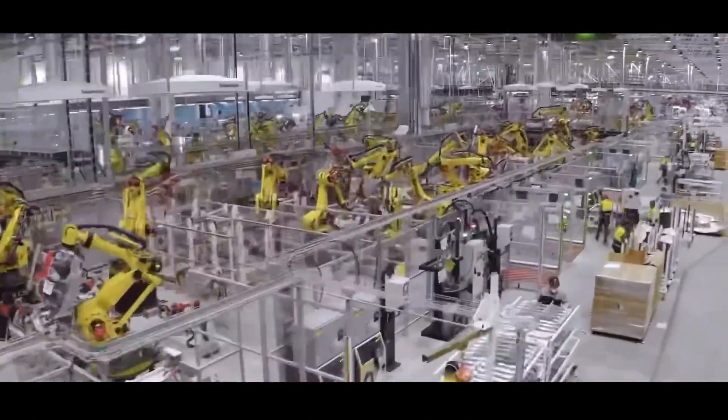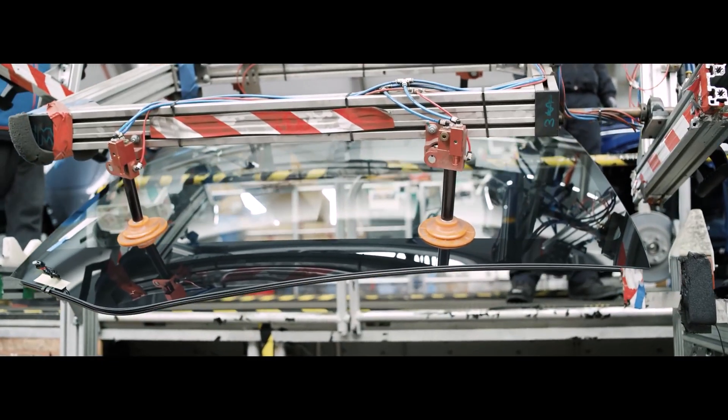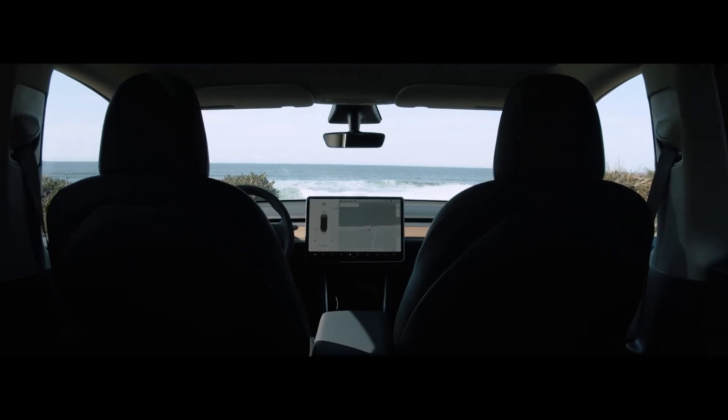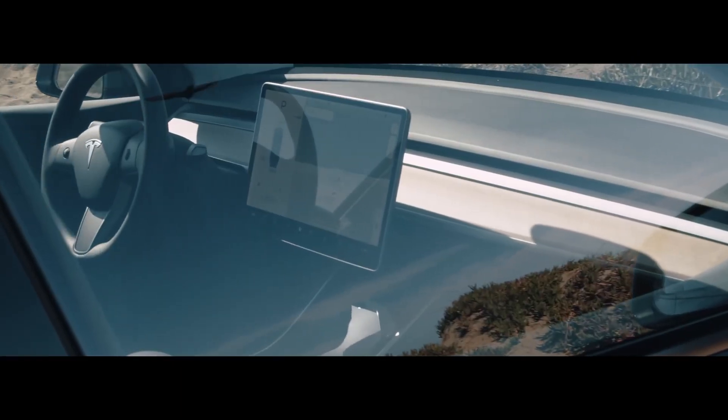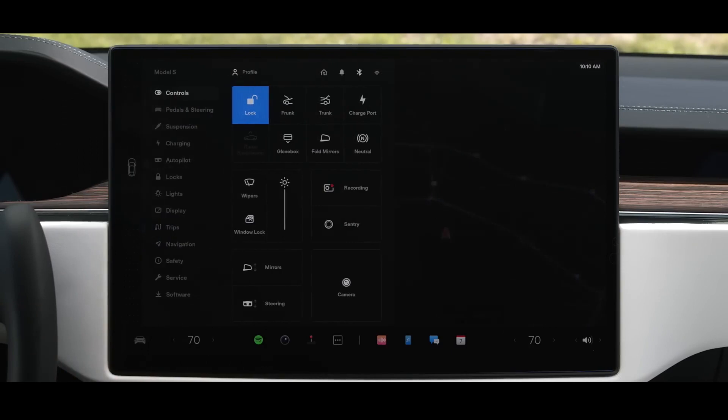Tesla thus manufactures everything, including electric motors, seats, window glass, and battery cells and modules. Even the software is entirely self-written by the business. In a Tesla, there is no Apple CarPlay. They have an exclusive operating system of their own.